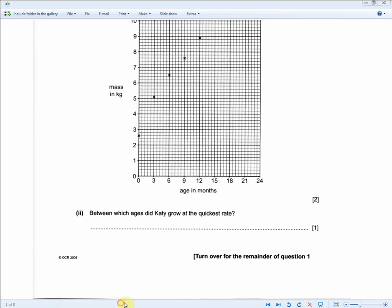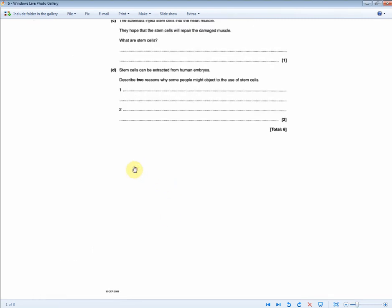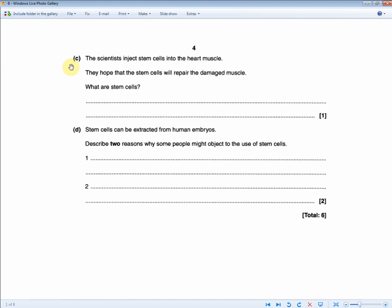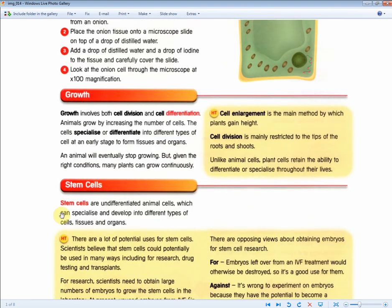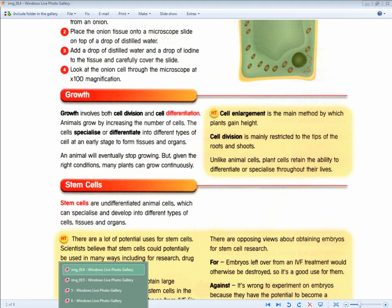So moving on to the next exam question, the final one for this growing up section of the revision guide. The scientists inject stem cells into the heart muscle. They hope that the stem cells will repair the damaged muscle. What are stem cells? So for one mark, what are stem cells? So the answer is stem cells are undifferentiated animal cells, which can specialize and develop into different types of cells, tissues, and organs. A model definition to memorize.